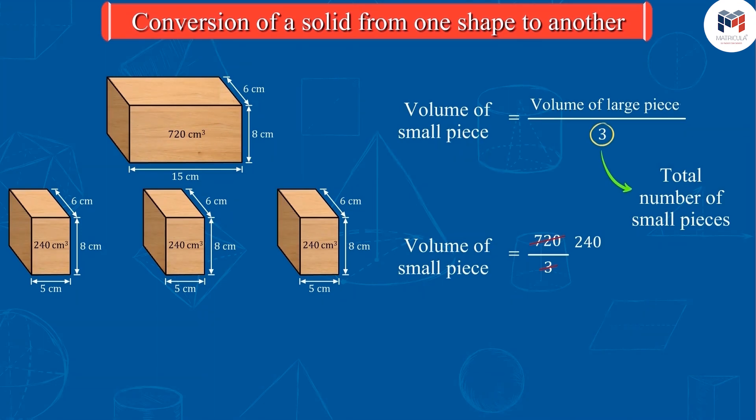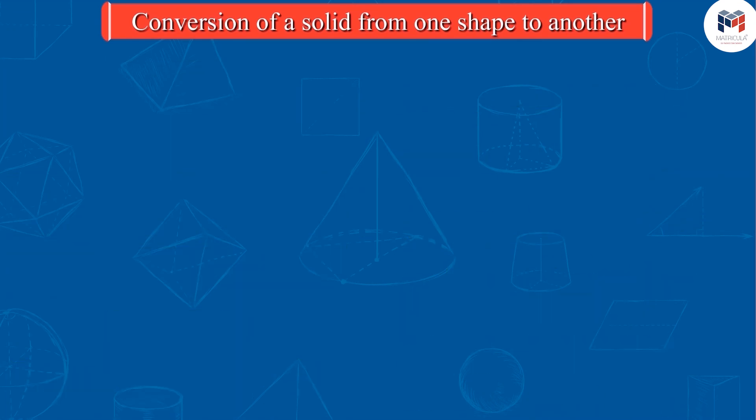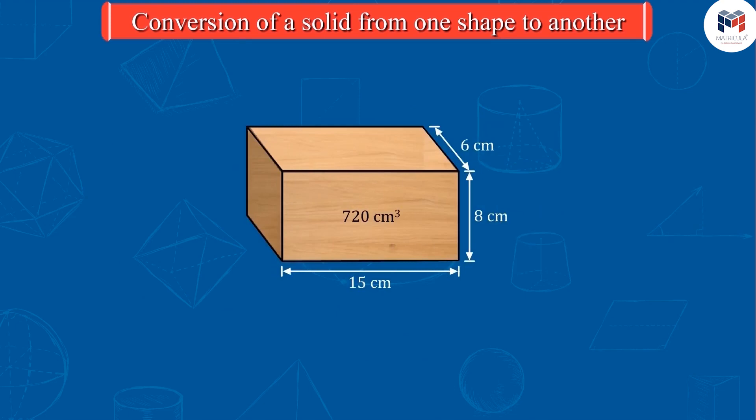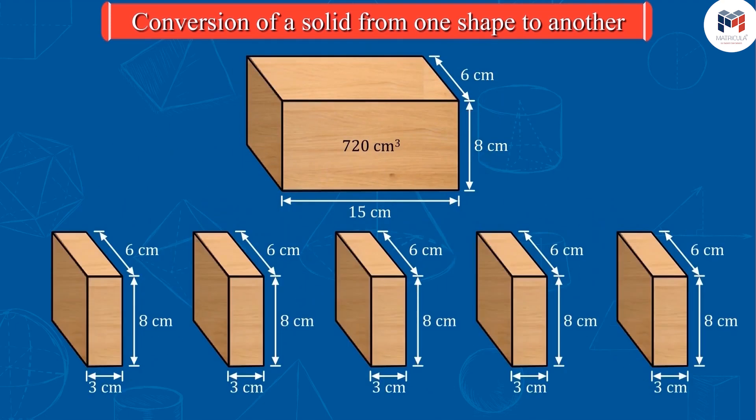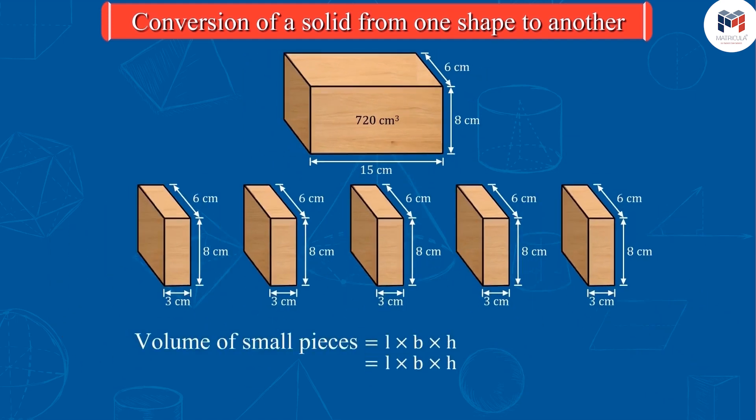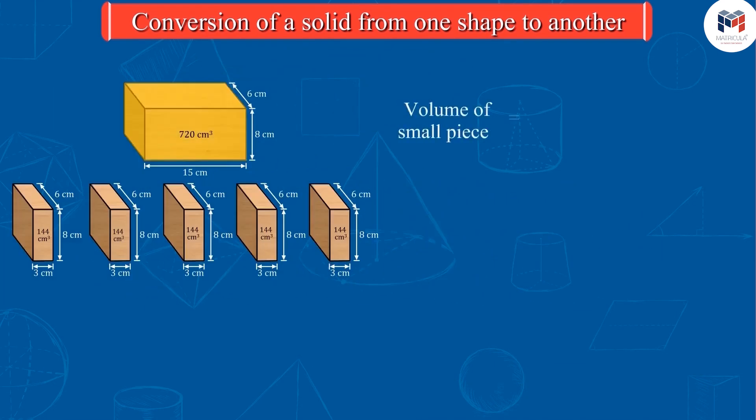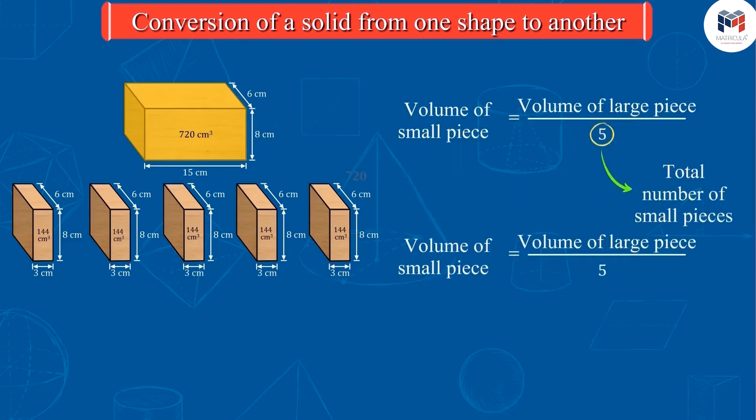Let us see some more examples. If we cut this piece of wood into 5 equal pieces this time, the volume of each piece will be 144 cubic centimetres, which is equal to one fifth of the volume of the larger piece.